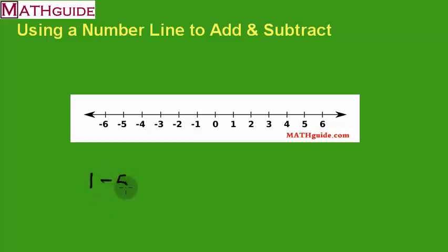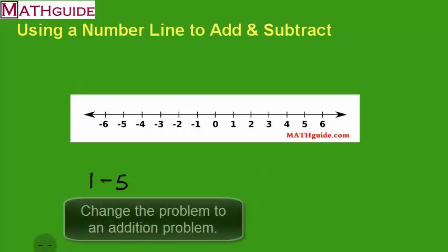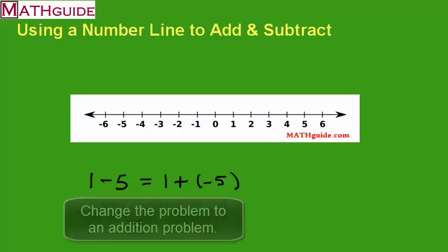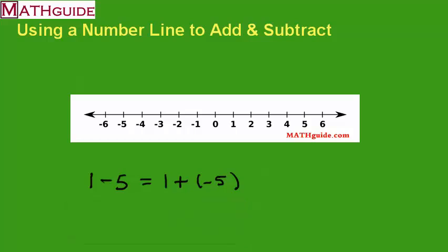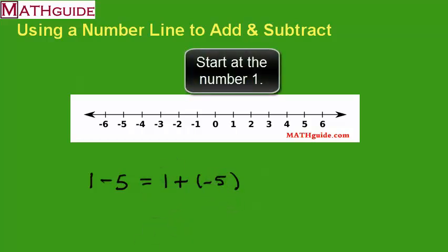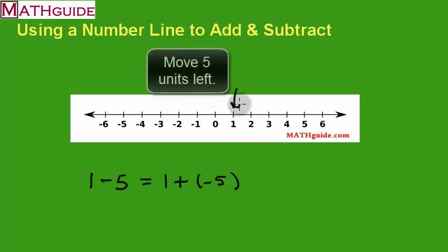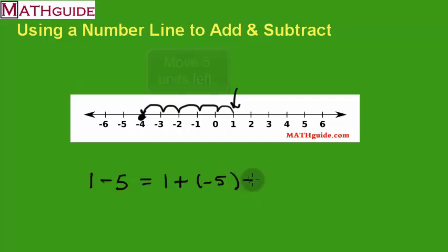Let's try one minus five. Change it to an addition problem: one plus negative five. Place your point at one and move five spaces — to the left, because it's a negative five. You start at one right here and move five units to the left: one, two, three, four, five. Your answer is negative four.